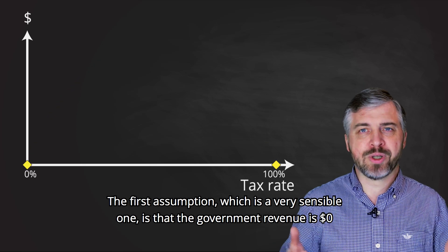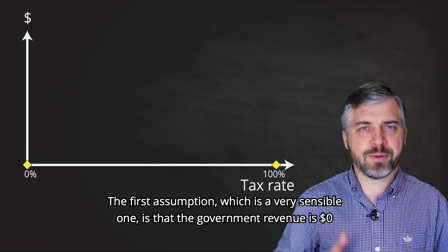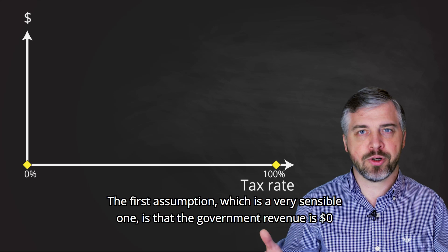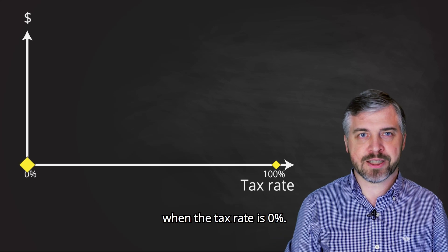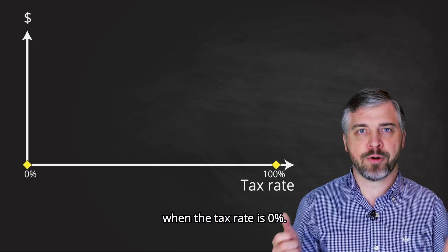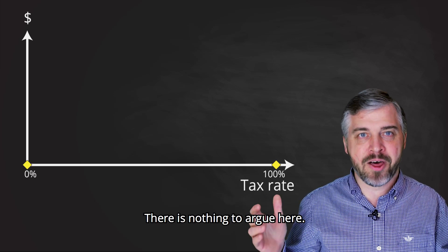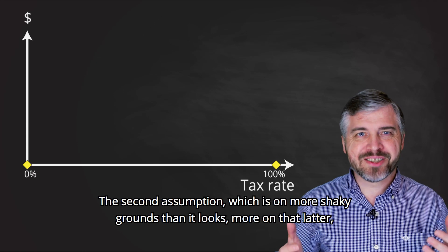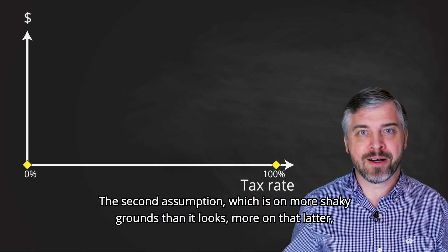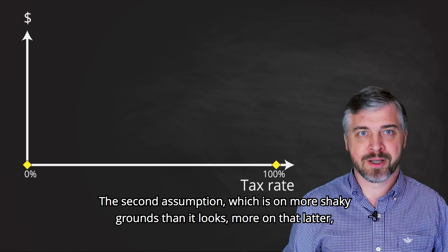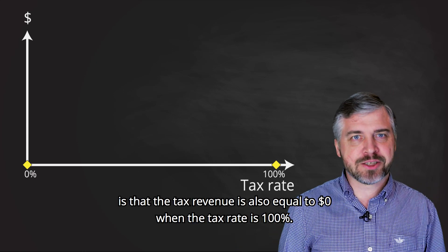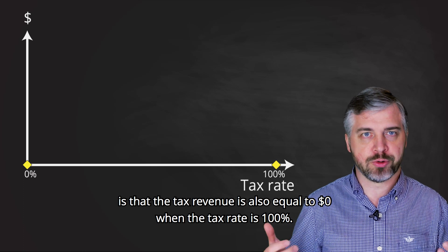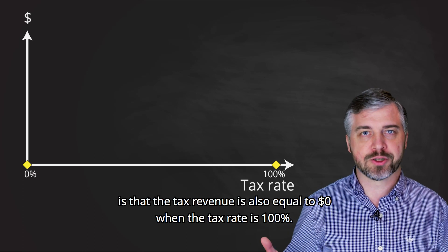The first assumption, which is a very sensible one, is that the government revenue is 0 dollars when the tax rate is 0%. There is nothing to argue here. The second assumption, which is on more shaky grounds than it looks — more on that later — is that the tax revenue is also equal to 0 dollars when the tax rate is 100%.